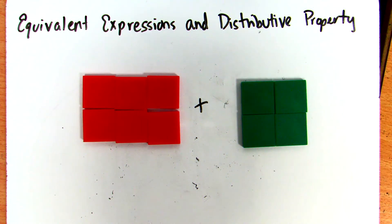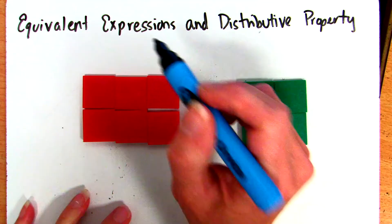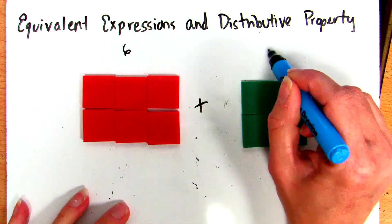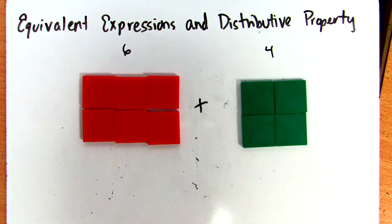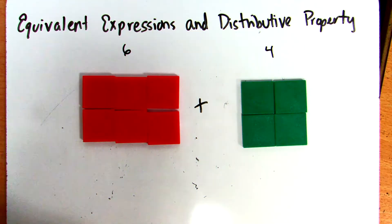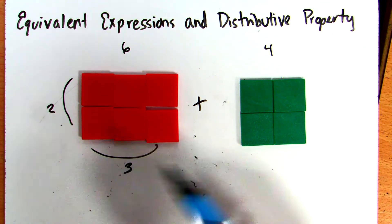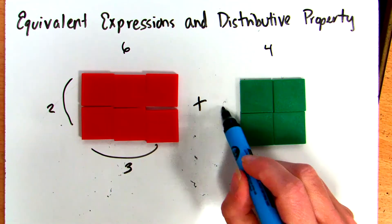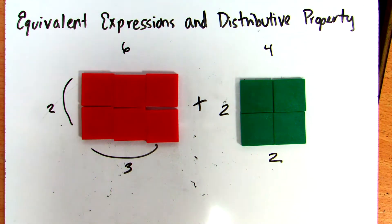Right now I have the problem modeled in front of me: 6 plus 4. Using the idea of even numbers, I've set my 6 up as 2 rows of 3 and my 4 as 2 rows of 2. We can all look at that and say 2 rows of 3 is the same as 6, and 2 rows of 2 is the same as 4.